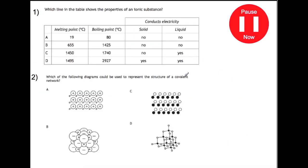Here are two final questions for you to try. Number one: which line in the table shows the properties of an ionic substance? Number two: which of the following diagrams could be used to represent the structure of a covalent network? For question one, we're looking for the properties of an ionic substance. Ionic substances have very high melting and boiling points, so our options are B, C, and D. Ionic substances will conduct electricity when they are in the liquid state only, so that would be C — our answer is C.